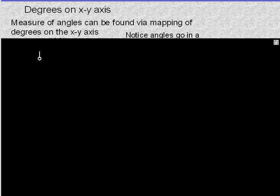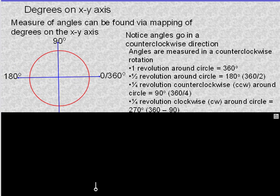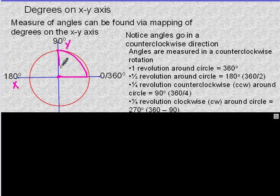So degrees on the xy axis. The measure of an angle can be found via mapping of degrees on the xy coordinate plane. There's a standard mapping of degrees and positions on your xy coordinate plane. If we start at the initial side on the x-axis, an angle here would be 0 degrees. As we rotate counter-clockwise up to the y-axis, that angle is 90 degrees. Counter-clockwise rotation is standard.